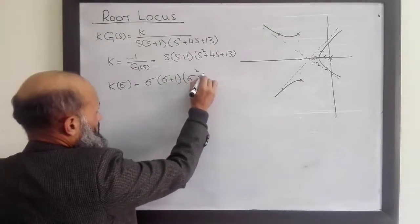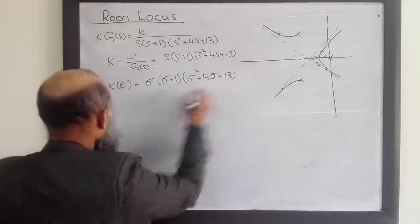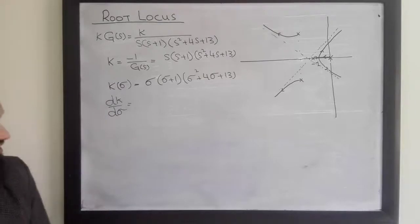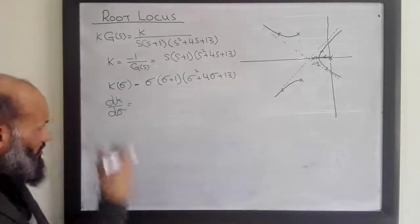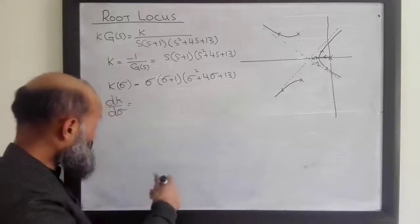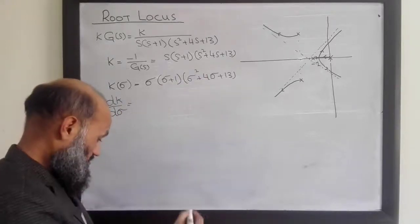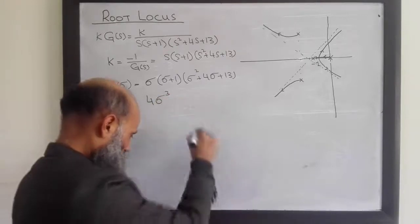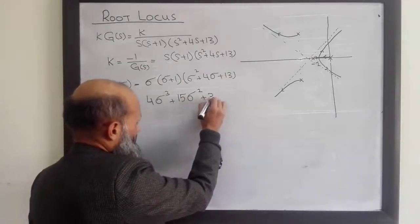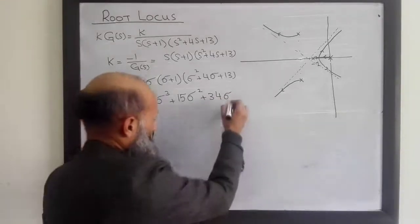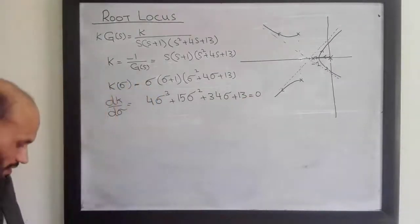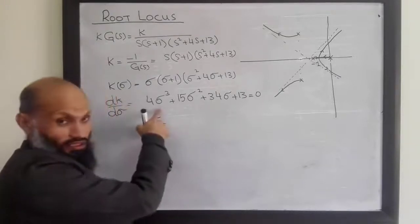After carrying out the differentiation — you can multiply and then differentiate, or apply the product rule, whichever is convenient — we obtain dK/dσ = 4σ³ + 15σ² + 34σ + 13. To determine the breakaway point, we set this equal to zero, giving a third-order polynomial in σ.